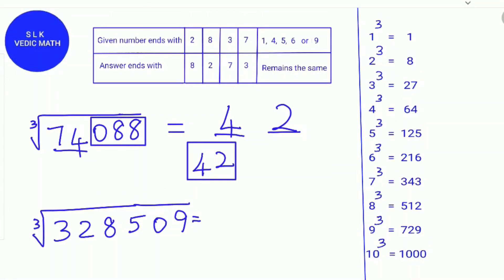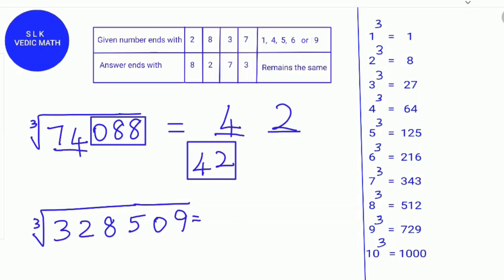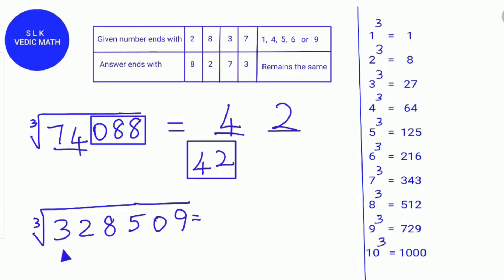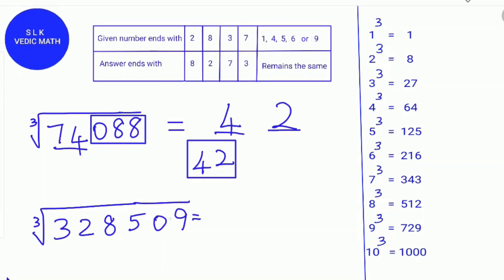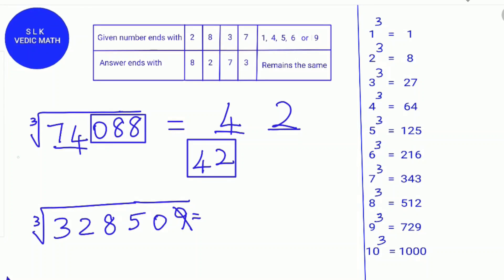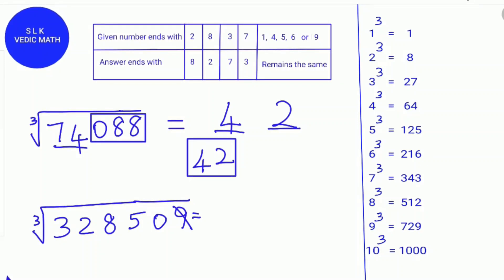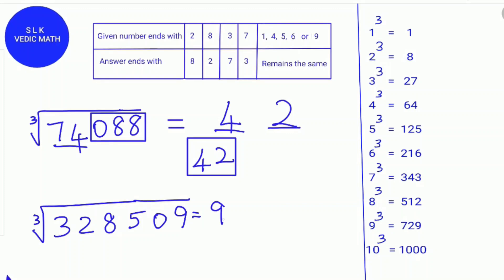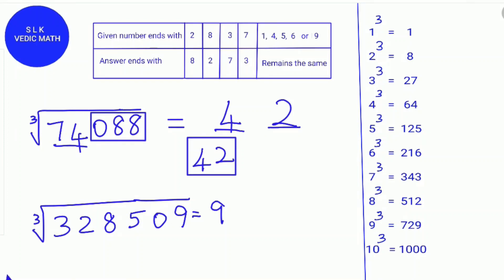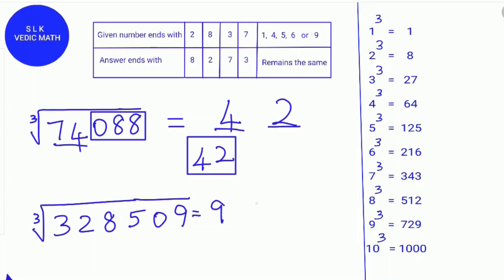Next example: the cube root of 328,509. For Rule 1, find the digital root of 328,509. First cross out digits that add up to 9: the digit 9 adds up to 9. Then add the remaining digits: 3 plus 2 is 5, plus 8 is 13, plus 5 is 18, and 1 plus 8 is 9. So the digital root of 328,509 is 9 — meaning 328,509 is a perfect cube.